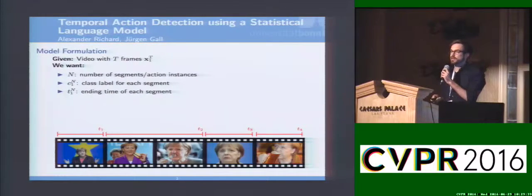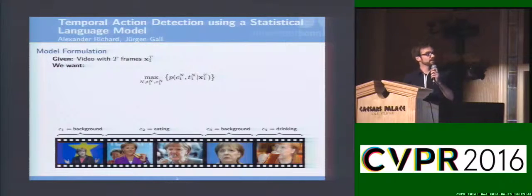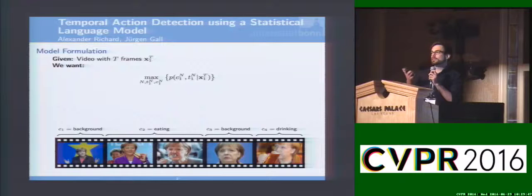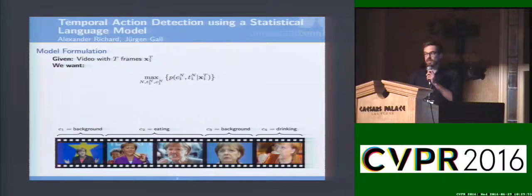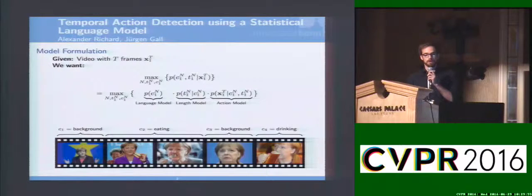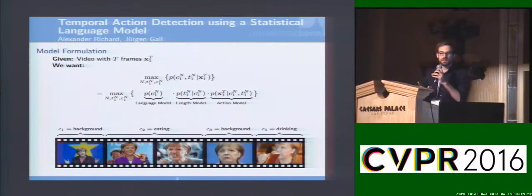Let's put this in a probabilistic context. We want to model the probability that these class labels and the segment end times occur given our video. We maximize over all these three quantities. If you have a look at this probability, we can easily factorize it into three different parts. So we end up with a model that consists of these three parts.